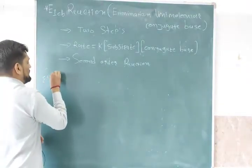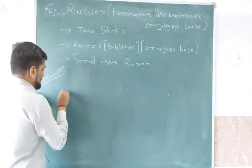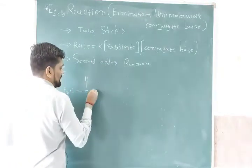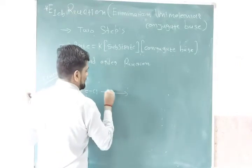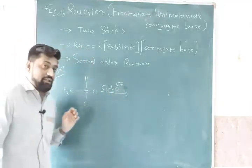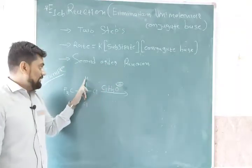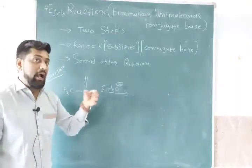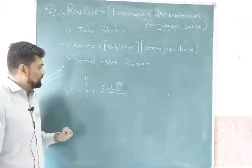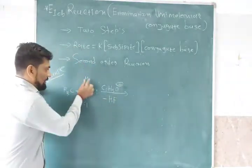Next we will discuss an example for this E1CB reaction. So here we take F3C-CCl2-H compound, which is CF3CCl2H, in the presence of C2H5O⁻ (ethoxide group). H is removed and F is removed from the E1CB, giving a dehydrogenated product with HF removal.